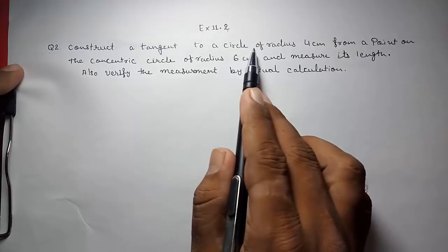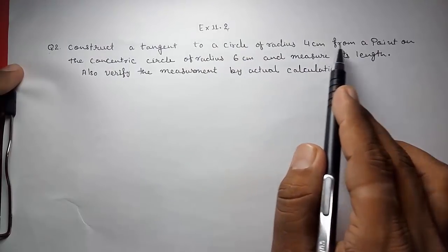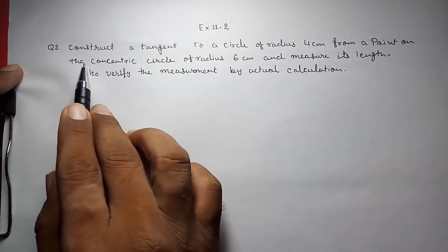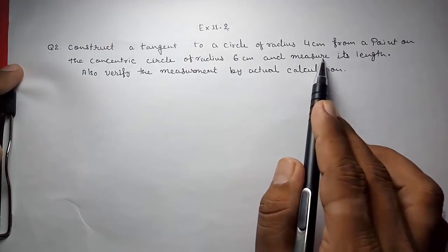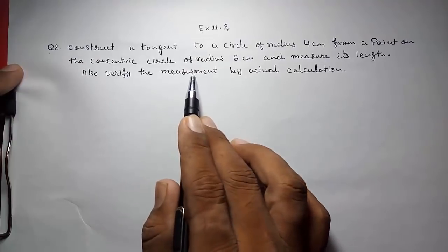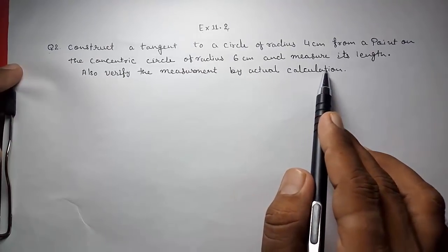Construct a tangent to a circle of radius 4 cm from a point on the concentric circle of radius 6 cm and measure its length. Also verify the measurement by actual calculation.